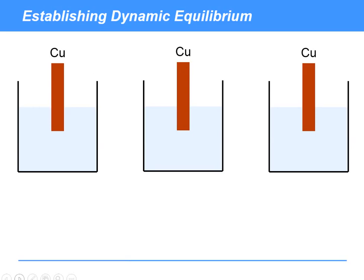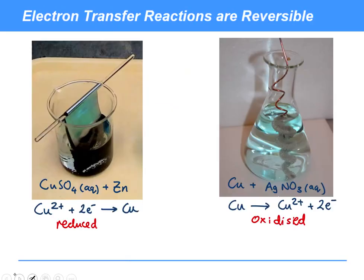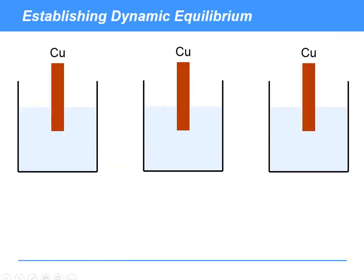Now, if there's nothing else around, so in this case here there was either some zinc or some silver plus ions around, then these reactions are essentially irreversible. But if we have a closed system here where only the copper is present and some water, then we can get a dynamic equilibrium established. So how does this happen?